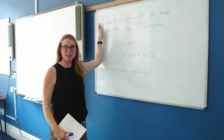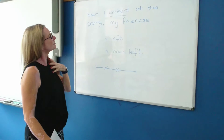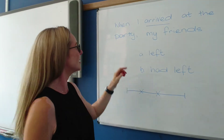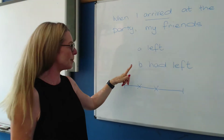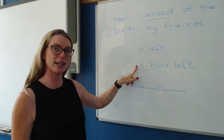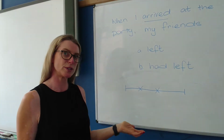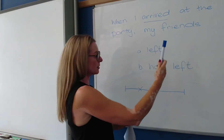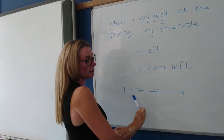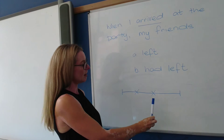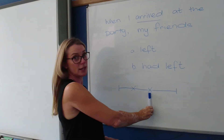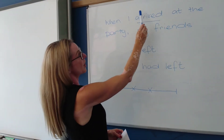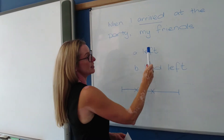So I have a sentence here. When I arrived at the party, my friends: A) left, and B) had left. But what's the difference? Let's have a look. 'Arrived' is in the past, so we have a look at my timeline — you can see here that this is the past. So if you say: when I arrived at the party, my friends left...